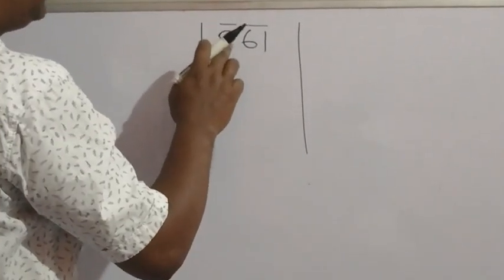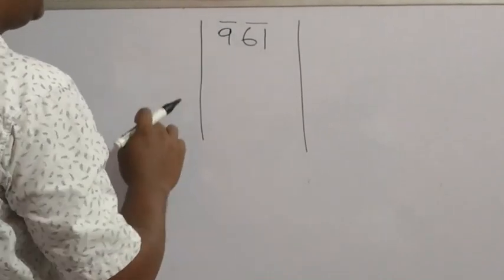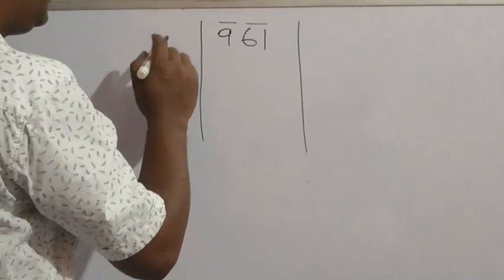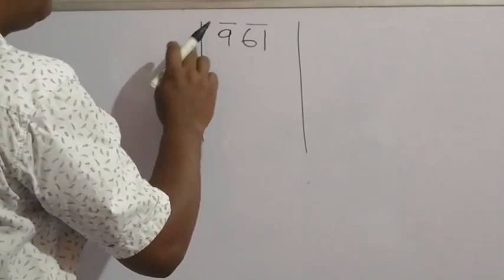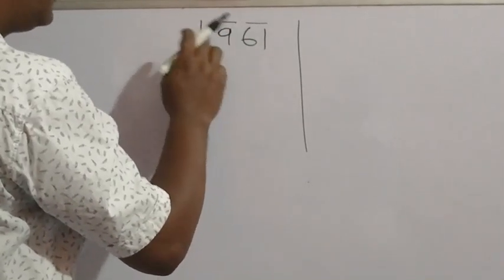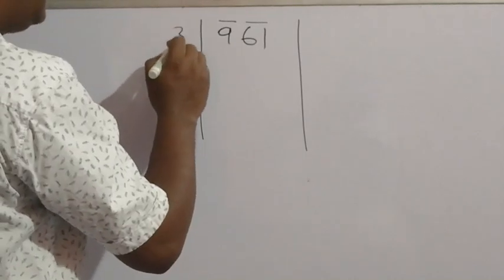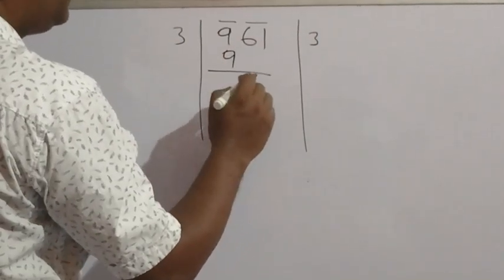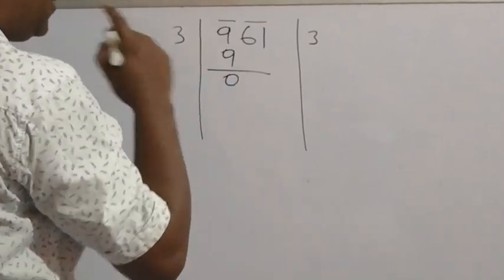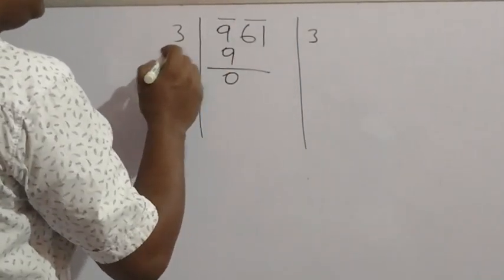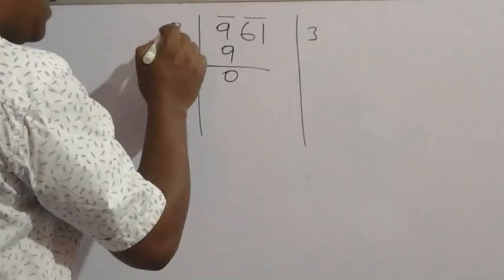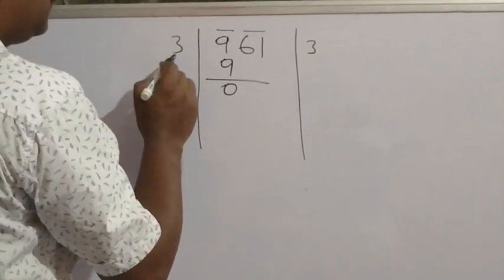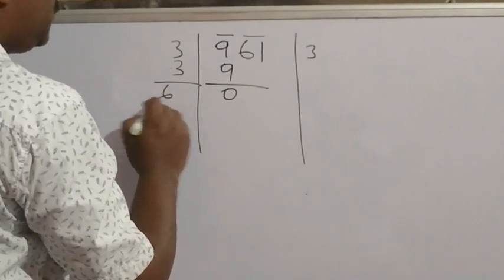Suppose 2: 2 × 2 = 4, less than 9. Try 3: 3 × 3 = 9, which equals 9, so we can take 3. If we take 4: 4 × 4 = 16, which is greater than 9, so we cannot take it. So we take 3. 3 × 3 = 9, it is divisible, remainder is 0. The same number 3 we have to add here: 3 + 3 = 6.